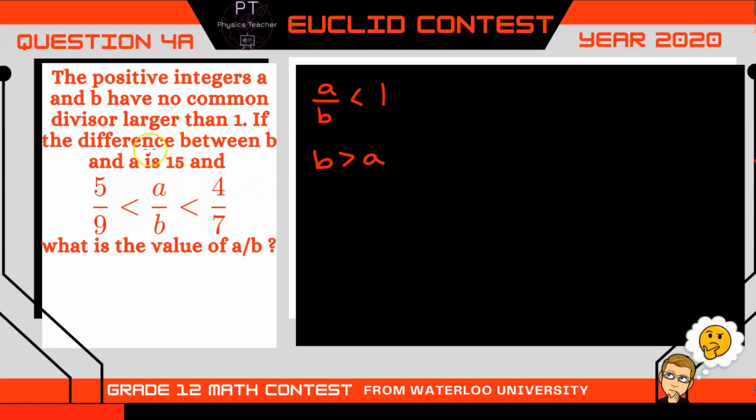And since B is greater than A, and that the difference between B and A is 15, I know that B is going to be 15 more than A. So I can rewrite this inequality to 5 over 9 is less than A over, instead of B, I'm going to write A plus 15, since B is 15 more than A, which is less than 4 over 7.